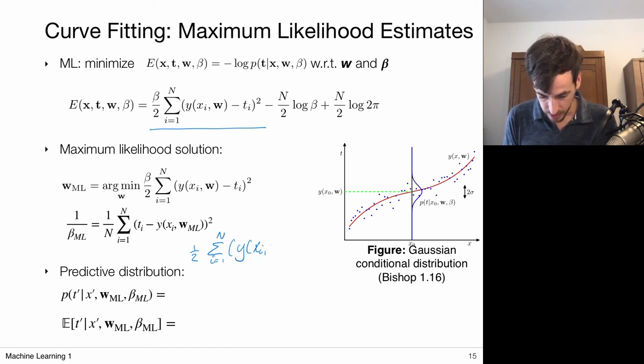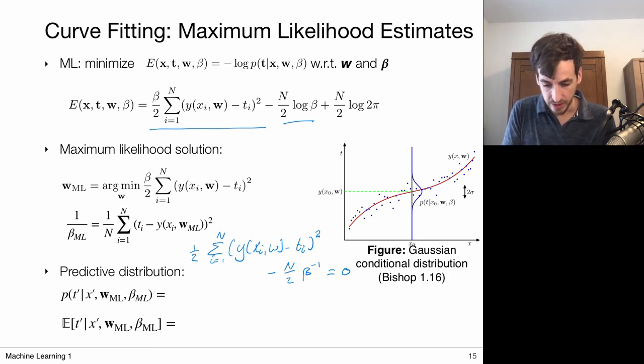of my model the square distance to ti. The derivative of this log is given by minus n over 2 beta inverse. And this has to equal to 0. So if we multiply everything with minus 2 over n and move this to the other side, we actually obtain that the maximum likelihood solution for beta or for the variance is given by this thing. And this looks a lot like the sample variance.